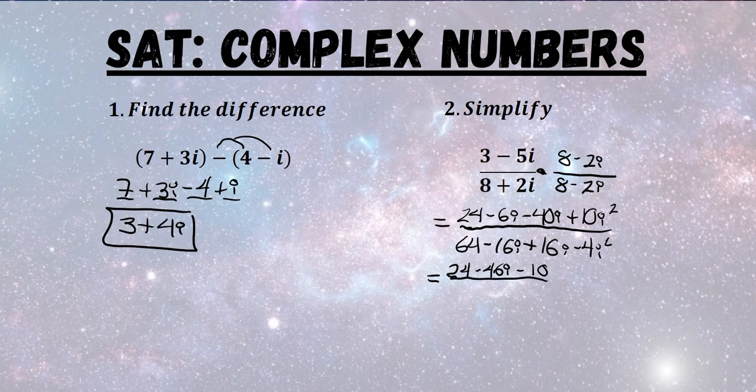We're going to do the same thing in the bottom. Negative 16i plus 16i. Those two terms cancel and we're going to be left with 64. Negative 4 times negative 1 is going to be plus 4.